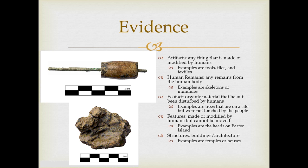Human remains refers to any remains of the human body — skeletons, mummies. Ecofacts are organic materials that haven't been disturbed by humans, such as trees on site that haven't been touched, the slope of the land, or the lay of the river. Features are things made or modified by humans but cannot be moved — for example, the heads on Easter Island. And then structures are buildings or architecture, such as temples or houses.